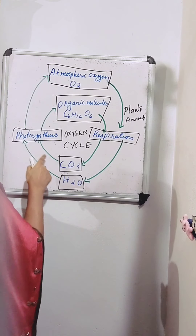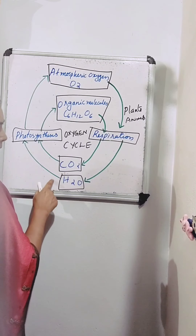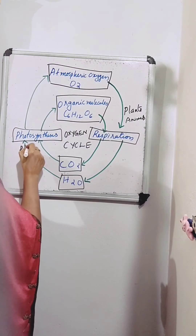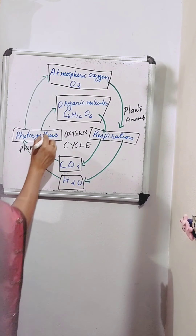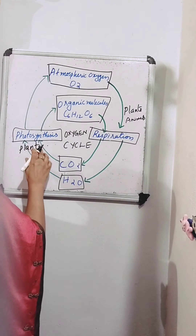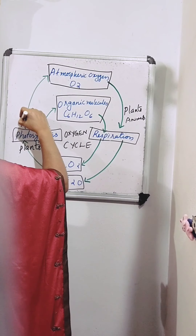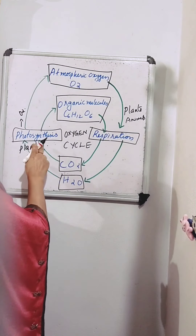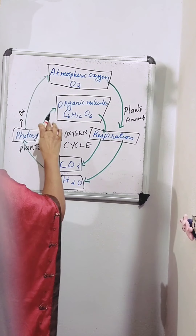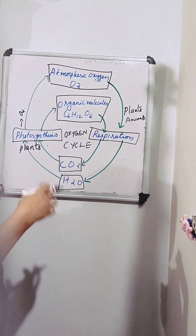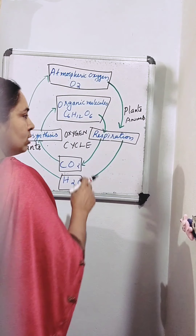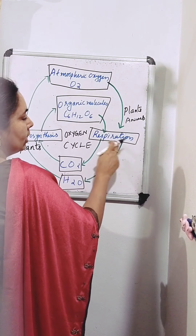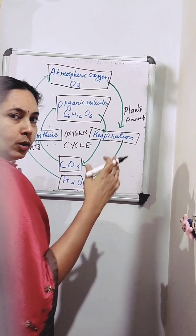Now, during photosynthesis, plants utilize both this carbon dioxide and water. This carbon dioxide and water is taken in by plants for the process of photosynthesis — for preparing food. And when plants prepare food, they give out oxygen, which goes back into the atmosphere. During photosynthesis, oxygen is given out and organic molecules — that is, glucose (C₆H₁₂O₆) — are formed. Plants and animals then use this glucose during the process of respiration to release energy.